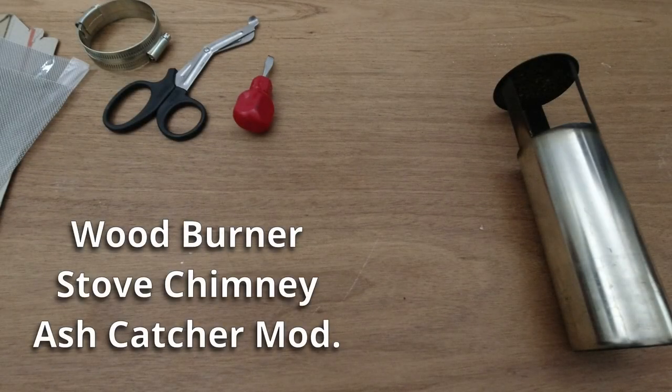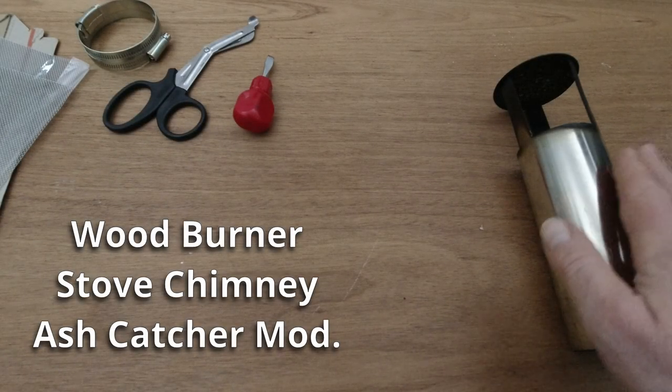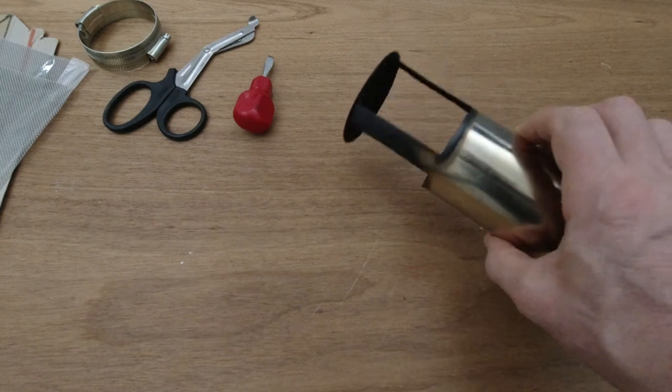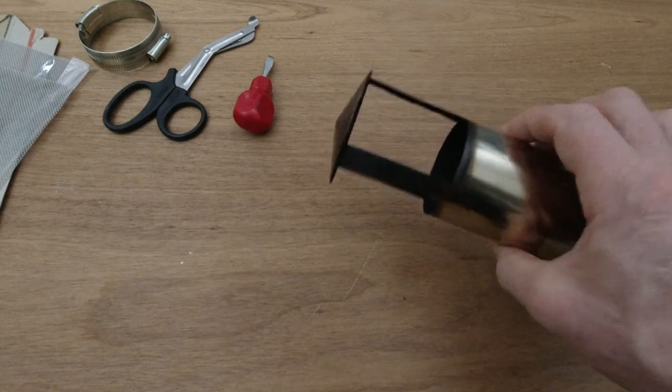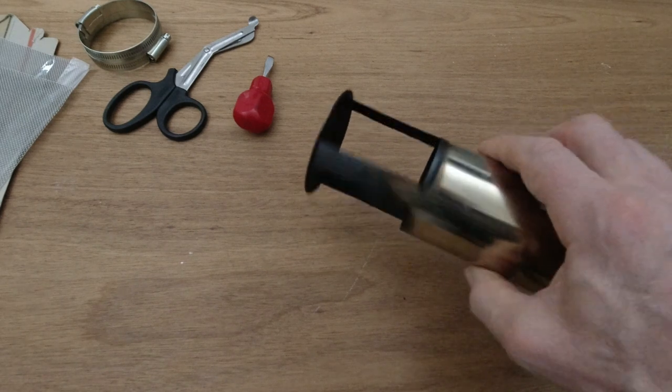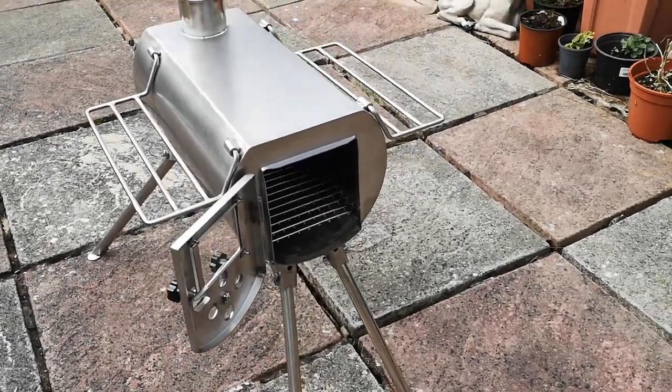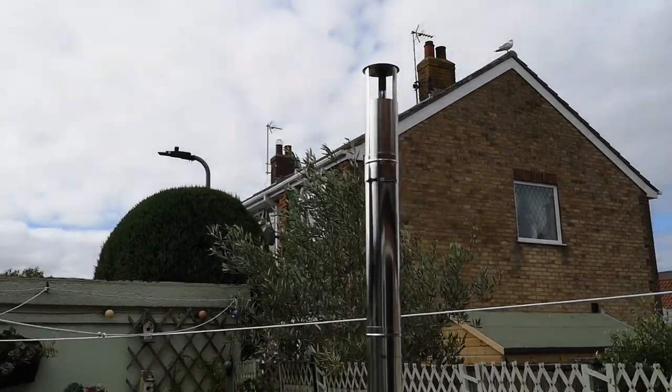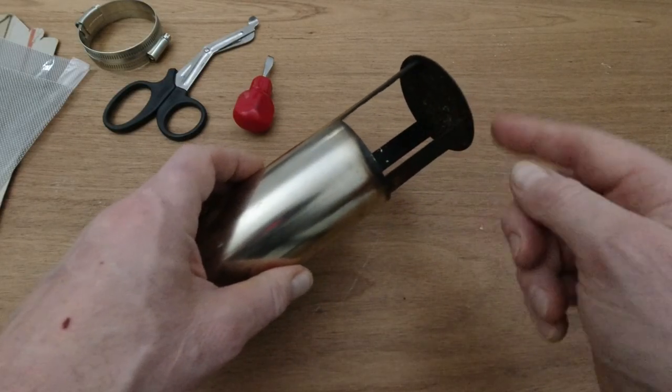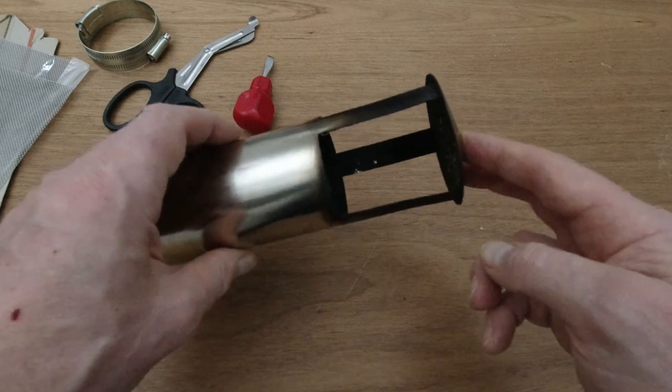Hello there, I hope you're well. What you can see here is the top piece of the flue, the chimney for my tent wood burner stove. Unfortunately, this spark arrester isn't working very well because hot embers have flown out of here and they've put holes both in the tent and in the top.